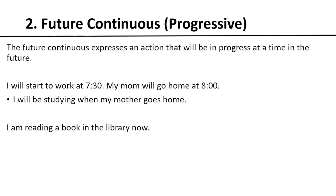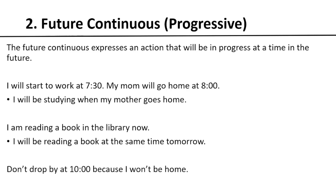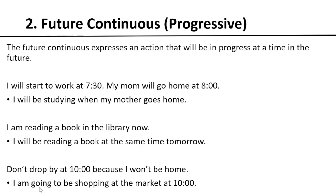Another situation: I'm reading a book in the library now, so I can say 'I will be reading a book at the same time tomorrow' — maybe at 8 o'clock. Third situation: 'Don't drop by at 10 because I won't be home. I'm going to be shopping at the market at 10.' So here we use 'be going to' plus verb-ing: 'shopping at the market at 10.'